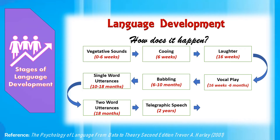Before children produce utterances that are grammatically correct by adult standards, they produce what is called telegraphic speech. Telegraphic speech contains a number of words but with many grammatical elements absent. As grammatical elements appear, they do so in a relatively fixed order for any particular language.